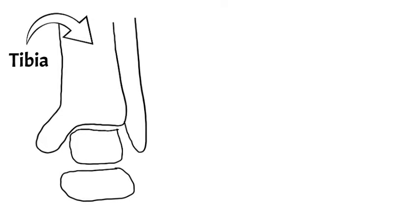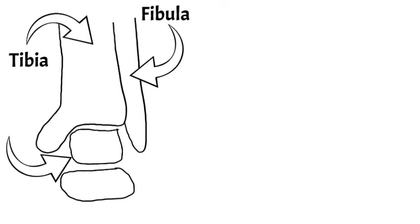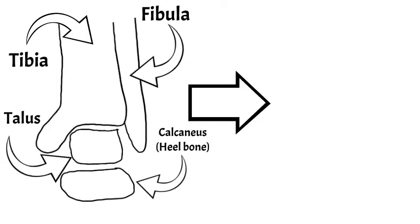So the big bone there is the tibia. The bone next to it is the fibula. It takes about an eighth of your weight. And then the bone below those two bones is called the talus. It's a square-type bone just there. And underneath that is your heel bone. The two bones that are involved in the ankle fusion are the tibia bone and the talus, so the square and the shin bone.